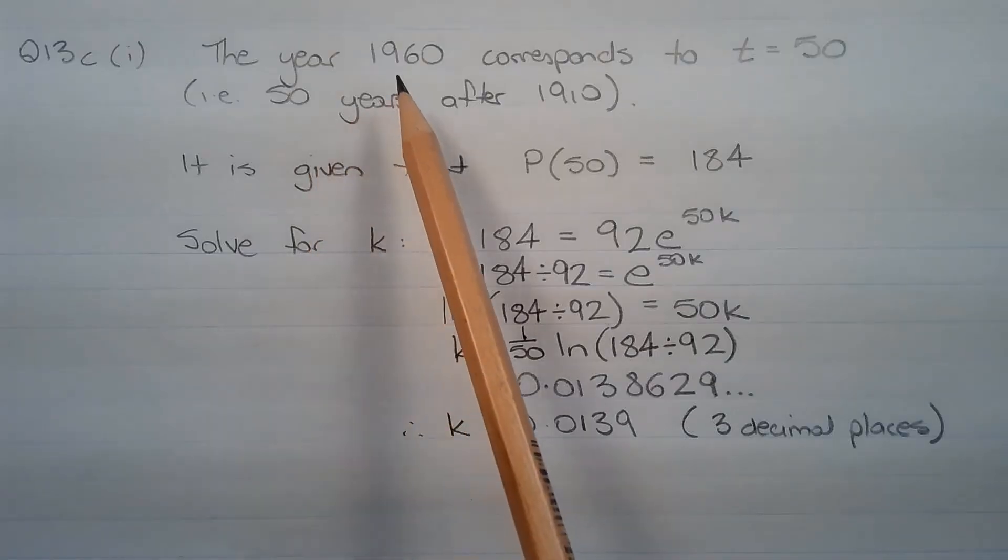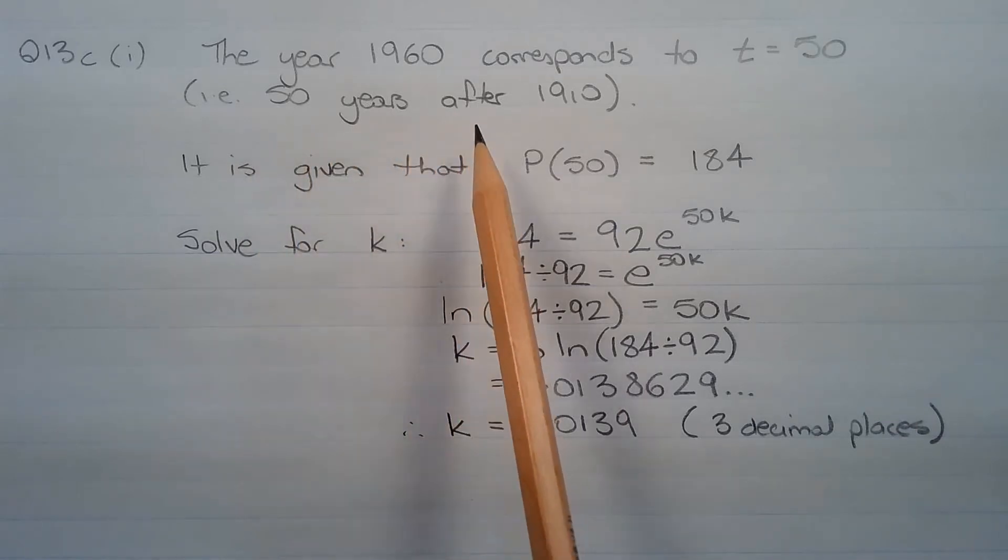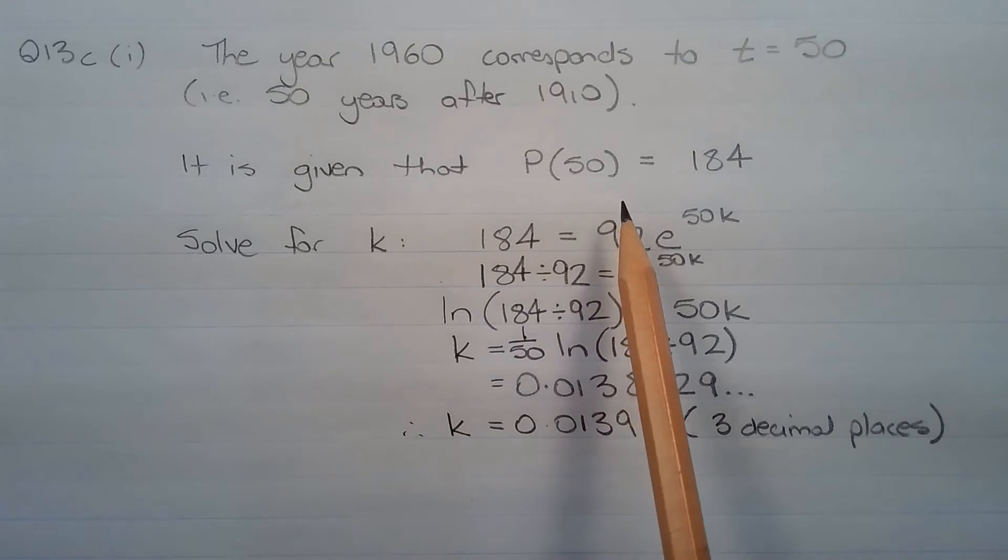The year 1960 corresponds to t = 50, that is, 50 years after the year 1910. It is given that P(50) is equal to 184 million, so we represent this as P(50) = 184.